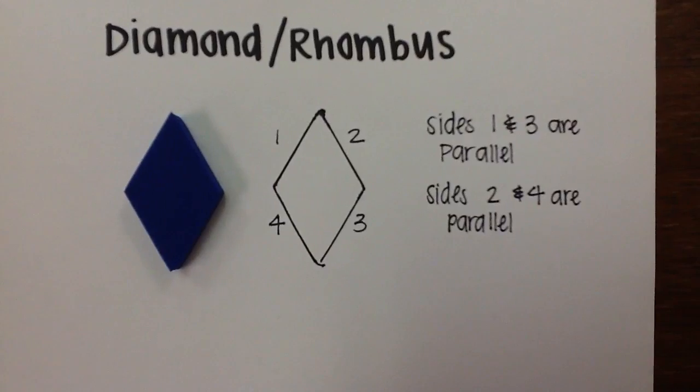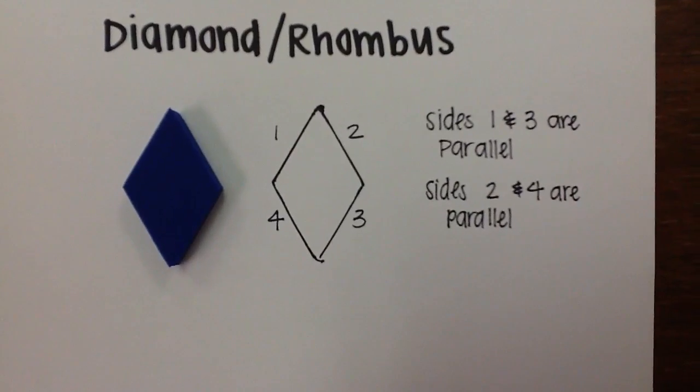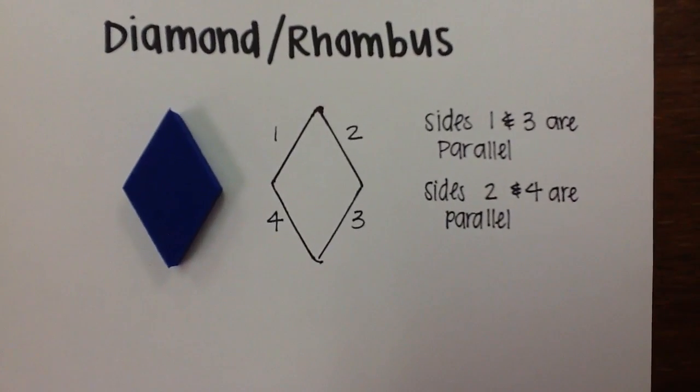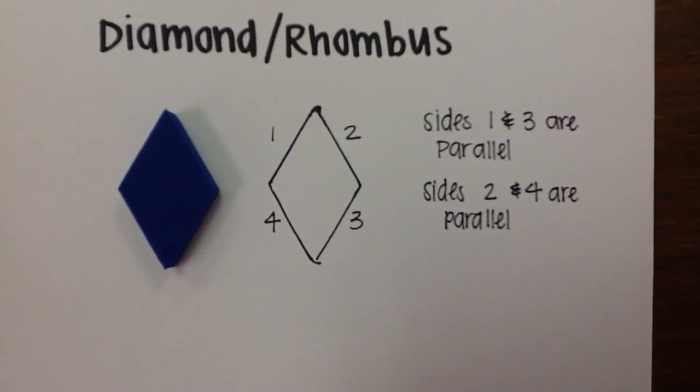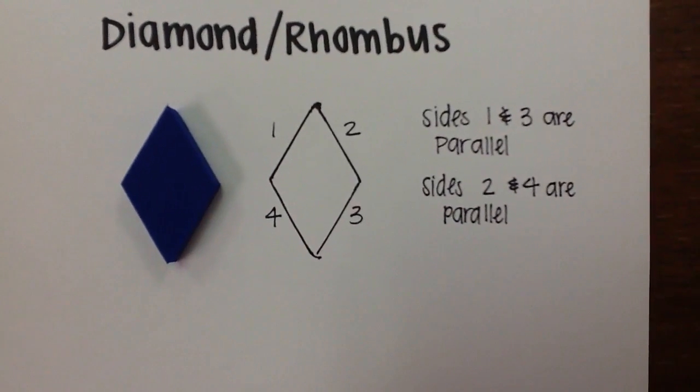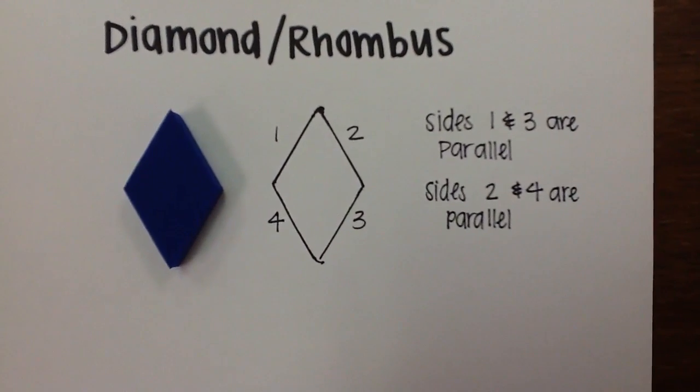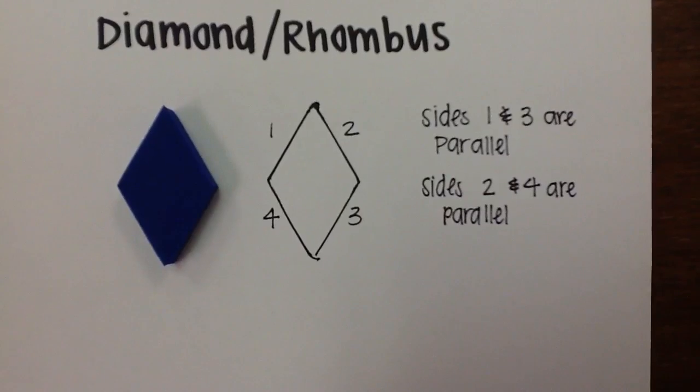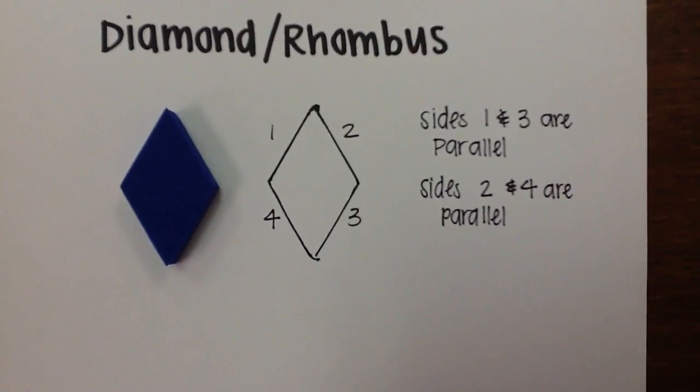The third shape is a diamond, also called a rhombus. It has four equal sides and the opposite sides are parallel. In the pattern blocks it is blue.